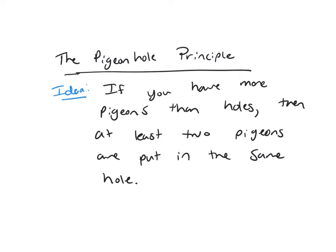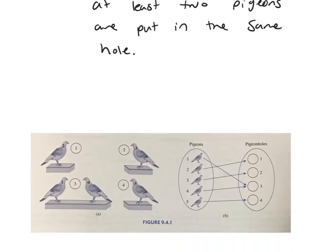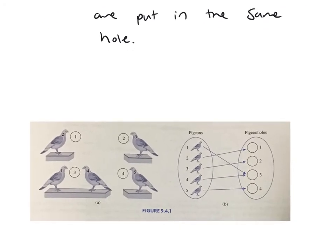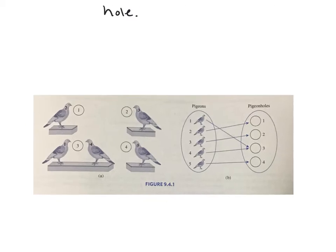So if we look, your book had a really good picture of what's going on. Let's look at this figure here on the left. If you look, you have five pigeons, but you only have four shelves or four holes for them to go into. And so on at least one of them, there has to be two pigeons.